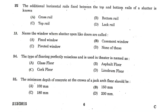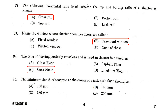The additional horizontal rails fixed between the top and bottom rails of a shutter are known as cross rails. The window where shutters open like doors is called a casement window. The type of flooring that is perfectly noiseless and is used in theatres is cork flooring.